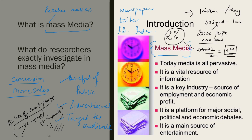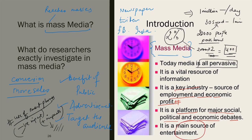Mass media today is very pervasive — it's everywhere and is a vital source of information. It is a key industry, a source of employment, and a source of economic profit. Mass media is a platform for major social, political, and economic debates. On Facebook and Twitter, there are trolls and debates where people either support or oppose points. Everyone participates in those debates. Mass media is also a main source of entertainment. That is why we study it.